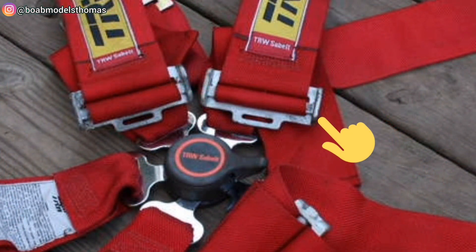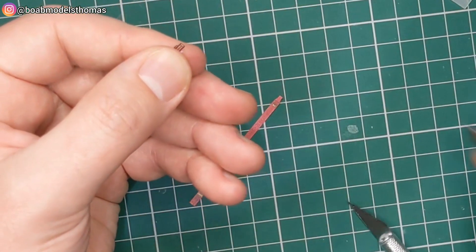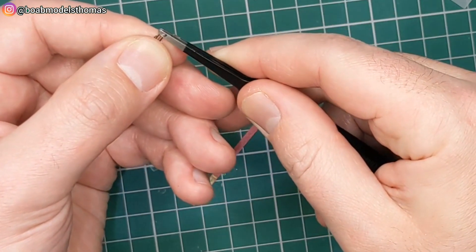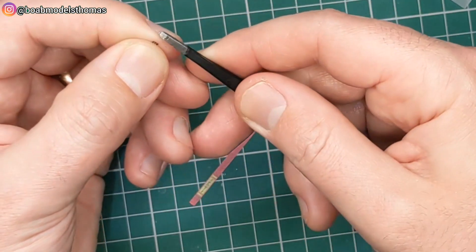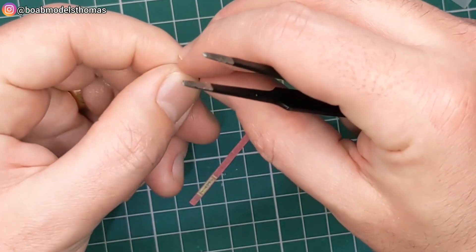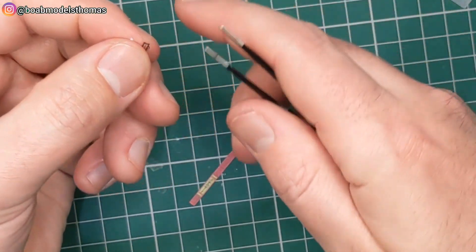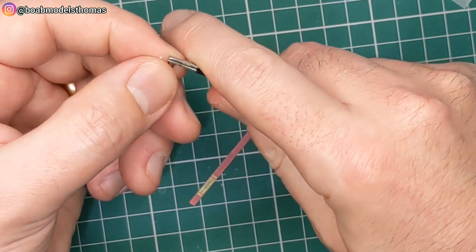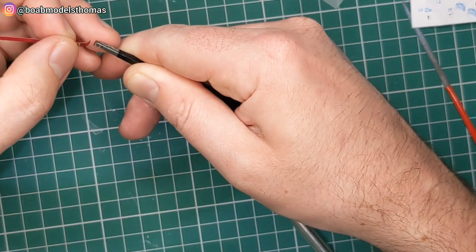Now the first step is to do these buckles here. These need to be folded very carefully so I'm using these round tipped tweezers to do that. These are very small pieces so I decided not to use a photo etch bender and the tweezers are good enough to do that.